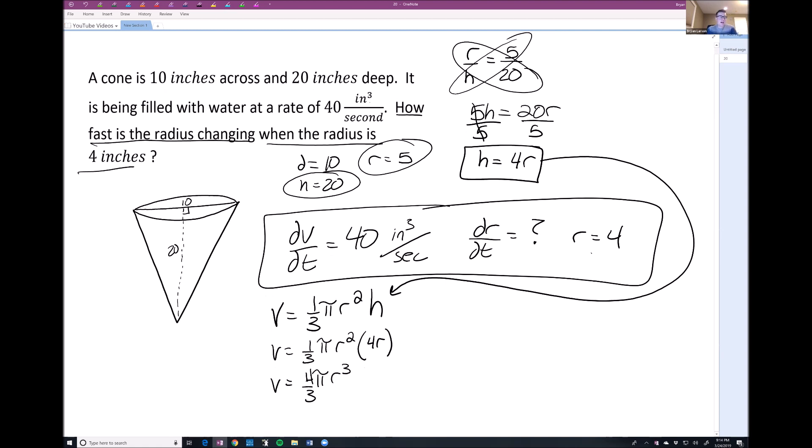Alright, so now we can go ahead and start to solve this problem out by taking the derivative. Okay, so I'm just going to move this to the right over here. So if I take the derivative of this, we get dV/dt, that's going to equal, we have here 4 pi r squared dr/dt. Okay, so that's just the derivative here.